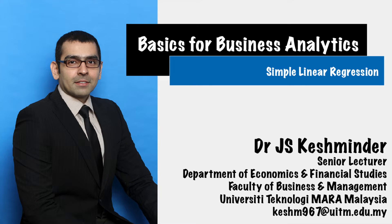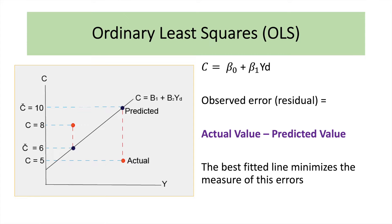In this video, I'm going to share with you simple linear regression, and we'll be using Microsoft Excel to do this. In doing regression, there's a certain mechanism that is working, and the mechanism here is referred to as Ordinary Least Squares — in short form, we'll call it OLS. I'm going to share with you briefly so that you have an idea of how regression is being done in Excel before we proceed.